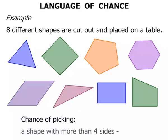What's the chance of picking a shape with more than four sides? Well, there's a pentagon. It's got more than four sides, so is that hexagon. So again, this is possible, isn't it?